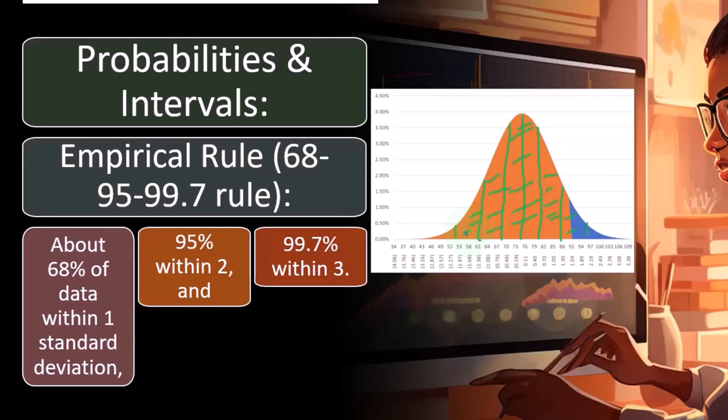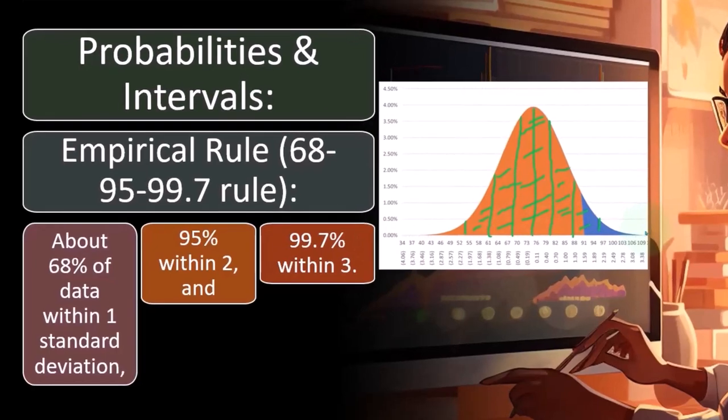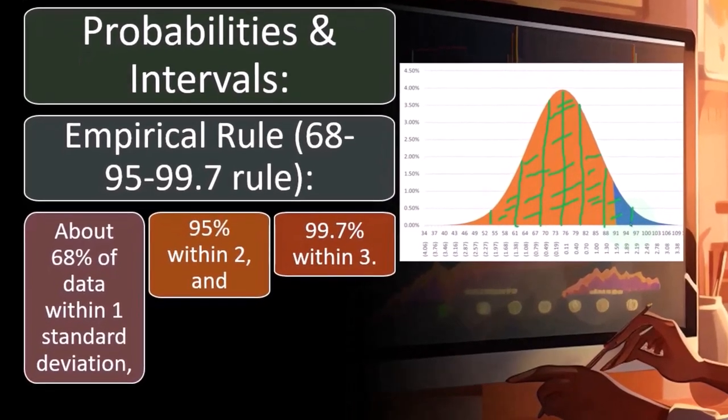Now note that in theory, the bell-shaped curve is one of those things that go on forever. It goes on forever to the left and to the right. But if you go three standard deviations, or four standard deviations, you have the vast majority of the data. The fact that that's so precise is quite nice.